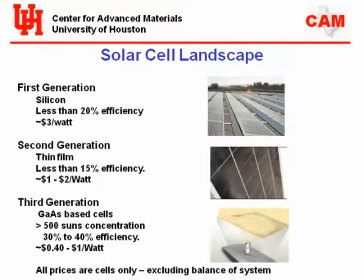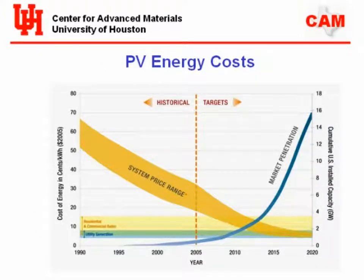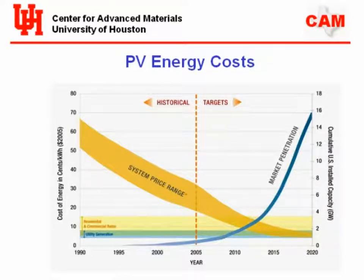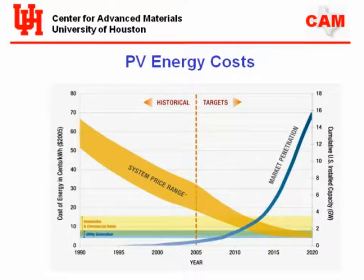These cells work during the day, not when clouds are out or when it's raining. There's a cost associated with all of this. The balance of plant is probably a factor of two to three times the cost of the solar cell itself. This is a standard economics curve — as the price drops, market penetration increases. Currently we're at around three and a half to four dollars per installed watt. We need to drop the cost more, increase efficiency, or make the cells work longer.